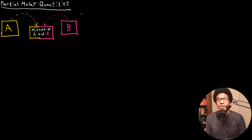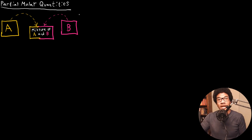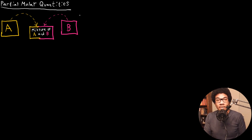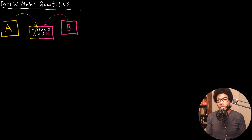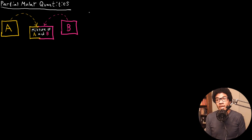What happens when you have scenarios where the composition of your system is changing — where maybe you're forming a mixture and the composition of your mixture is changing as you add another component? Maybe you're making a solution and you're adding some solvent, or maybe you're looking at a gas expansion that's allowing a little bit of gas to evacuate from your system. In those scenarios, we would need to know how the composition of the system is affecting our thermodynamic properties. And that's where partial molar quantities come into play.